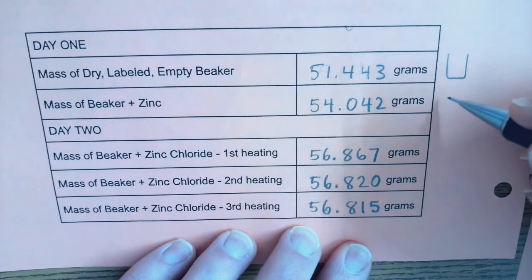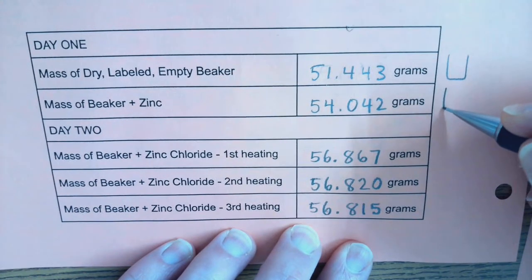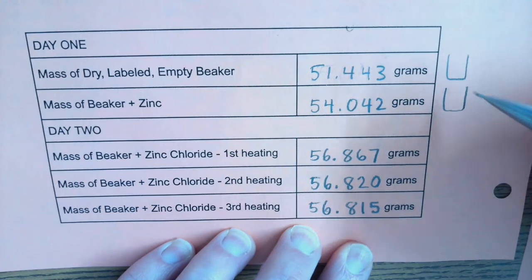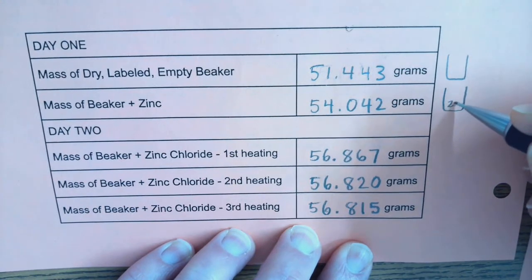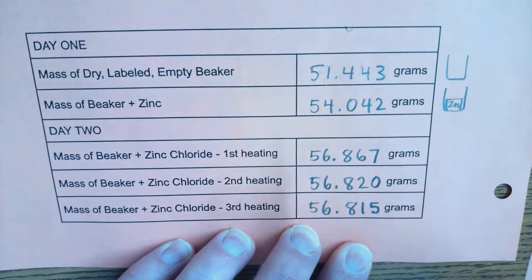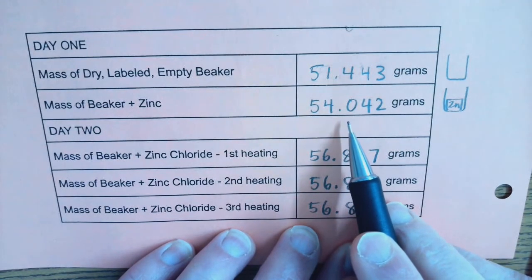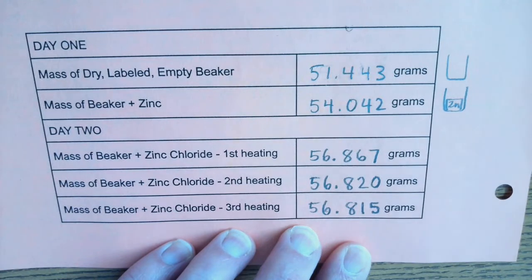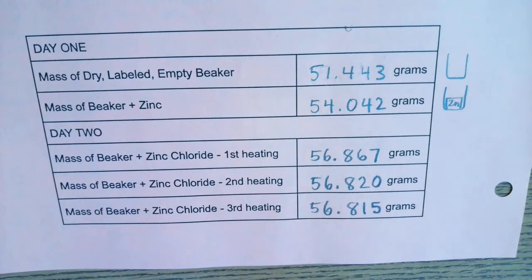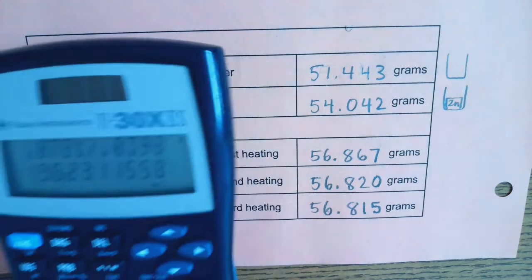Okay so on day one pretty simple procedure right we took our beaker and we added some zinc pieces, those square pieces, several of them, and of course the mass went up when we added those pieces. So what I really care about those two measurements is how much zinc did I end up adding to the beaker.